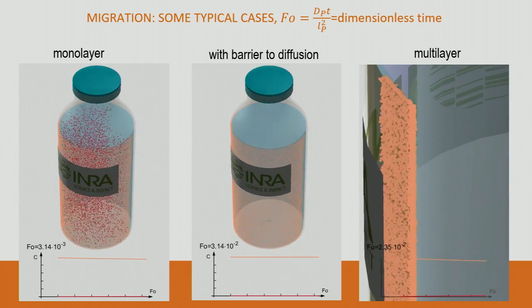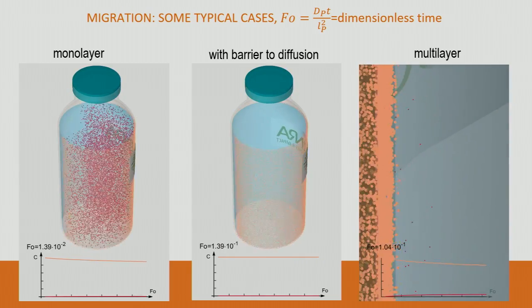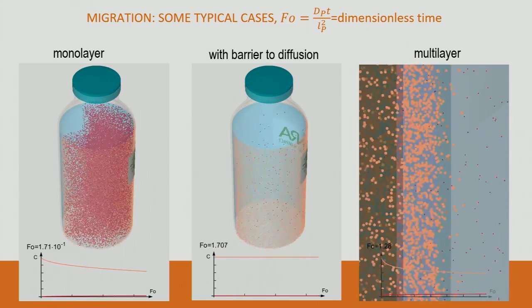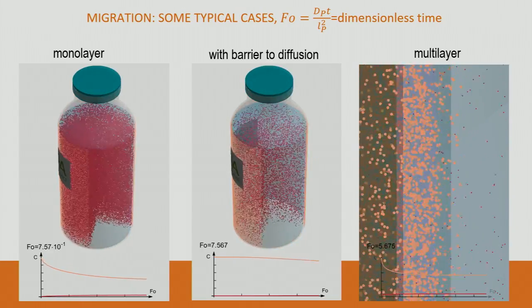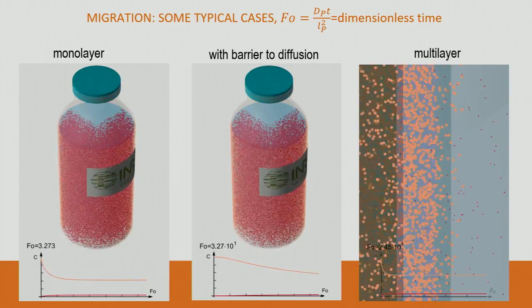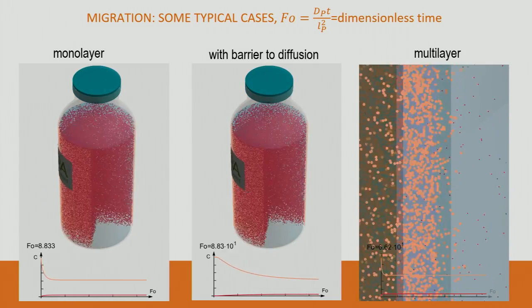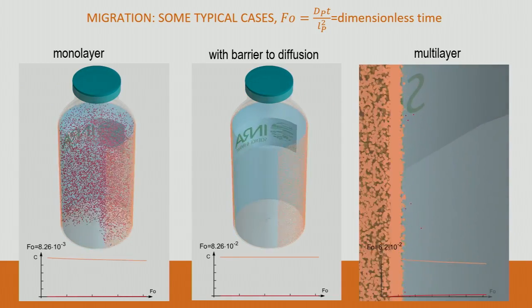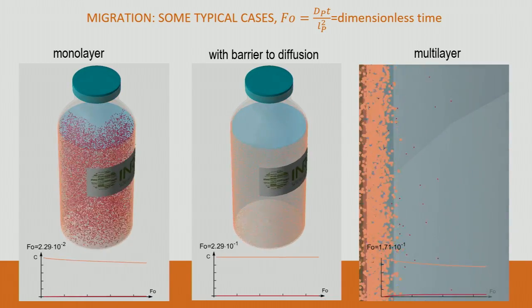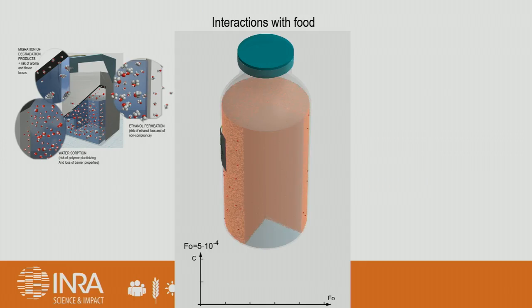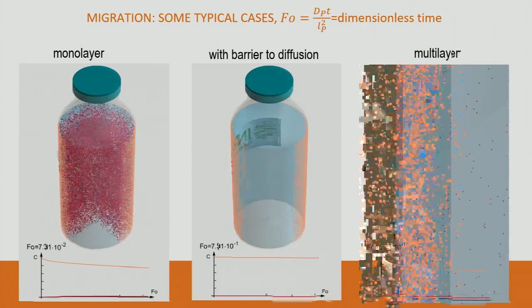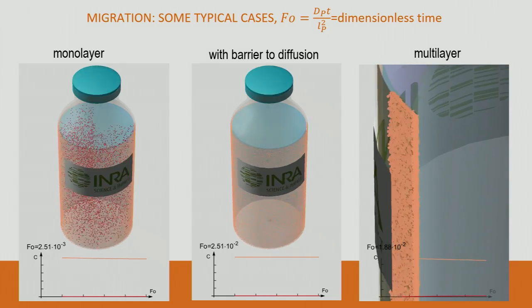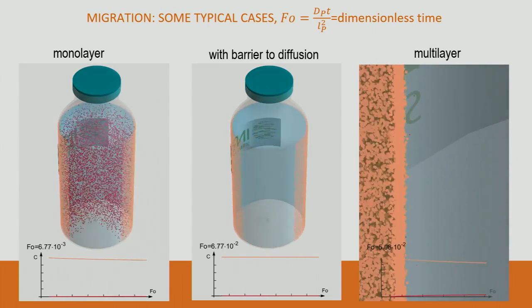What is migration modeling? It consists of predicting the amount of substances transferred from the packaging to the food. Initially the substances in the packaging are present at a certain concentration. When they are transferred to the food they increase there. We can also introduce a barrier via diffusion — as you see in simulation, there is a delay in the contamination of the food itself. That means we have a solution to decrease contamination. Even if the substance is harmful, we can design packaging to reduce contamination.